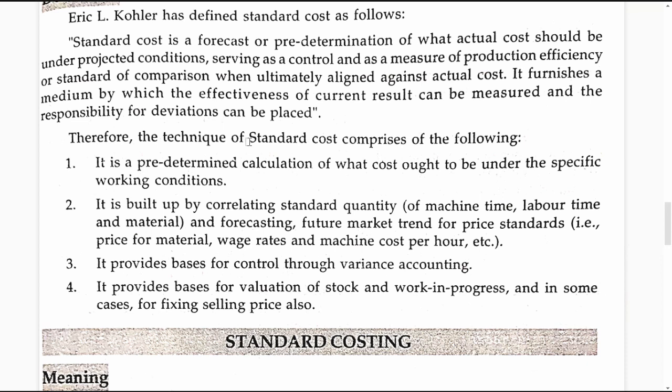Second, it is built up by correlating standard quantity of machine time, labour time, material and forecasting future market trends for price standards — that is price for material, wage rates and machine cost per hour. It builds up by correlating the standard quantity of inputs involved in offering a particular activity, whether manufacturing a product or offering a service.